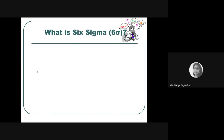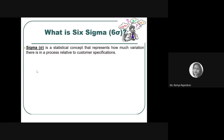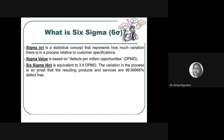Sigma is a statistical concept used to measure variation — essentially standard deviation. The sigma value is a number that gives us the number of defects per million opportunities — not defects per million products produced, but defects per million opportunities for error. With a deviation of six from the mean, you are allowed only 3.4 defects per million opportunities.